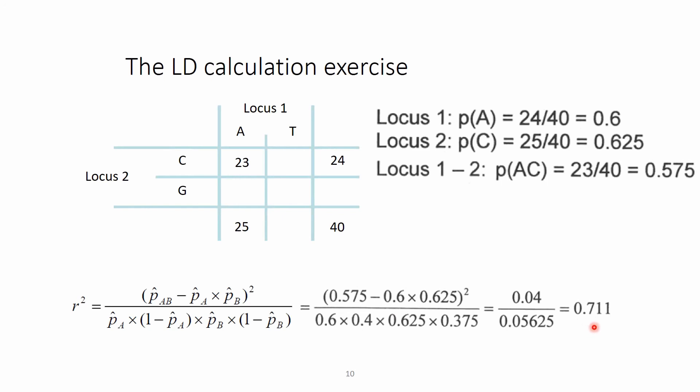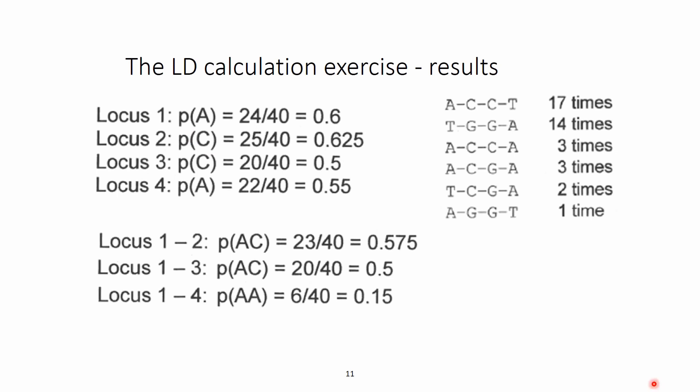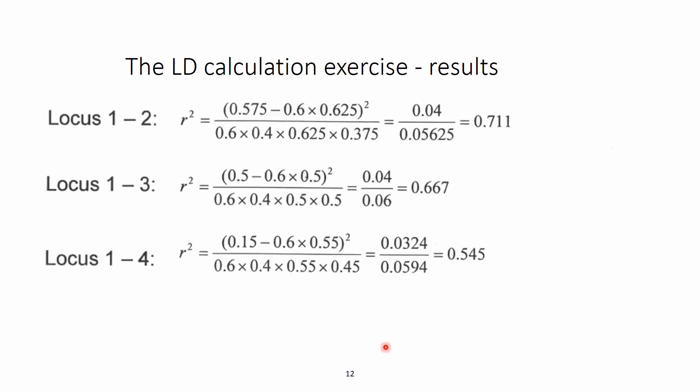On this slide I give you all the results for the other loci, so locus 1-2, 1-3, and 1-4, and the joint occurrences of these three pairs. And if we fill them in into the equation, the well-known equation, then we end up with, this is just a repetition from before, and then there is the LD between locus 1-3 and the LD between locus 1 and 4. So this is basically it. This is how you compute LD by hand.